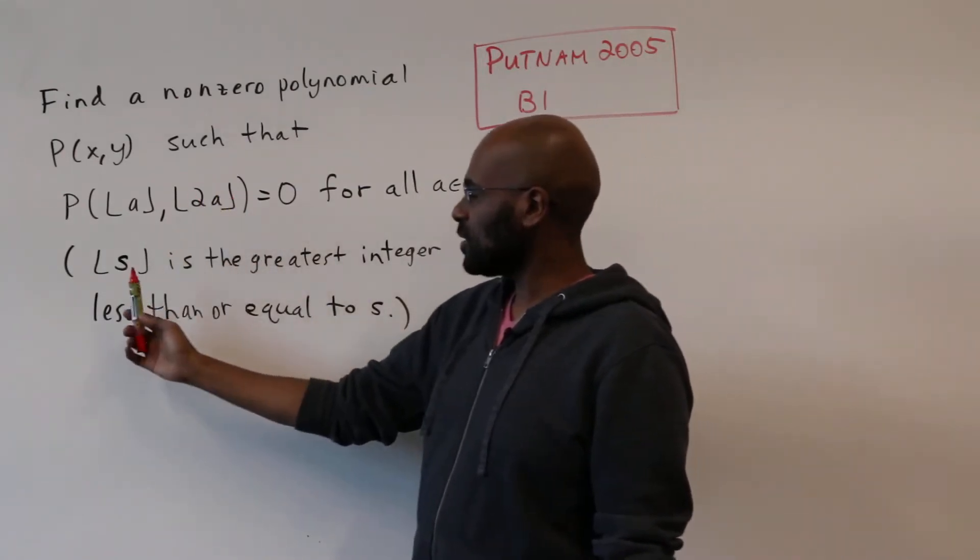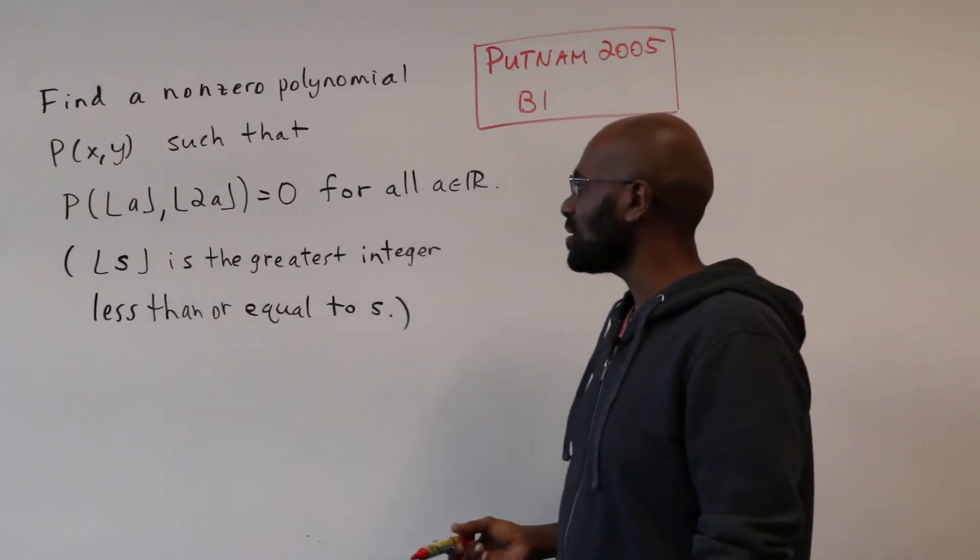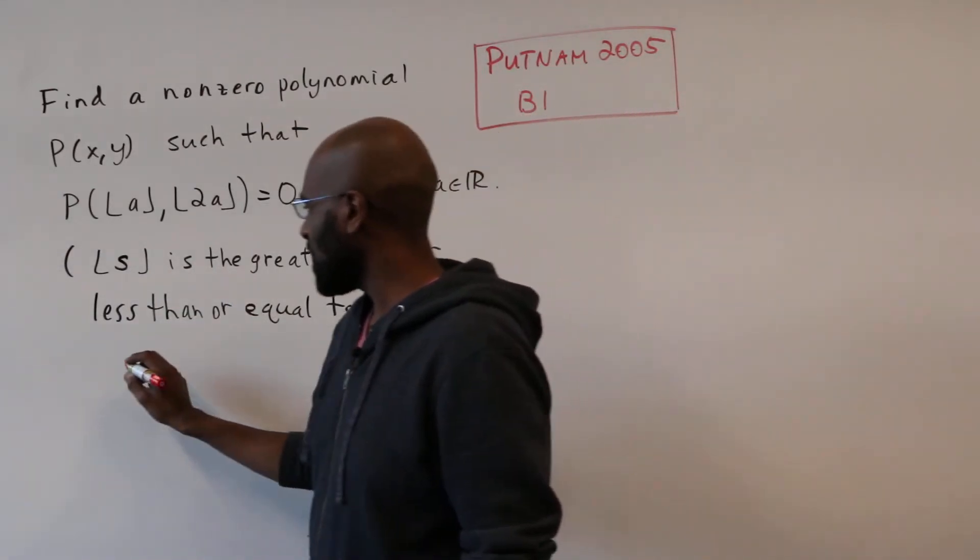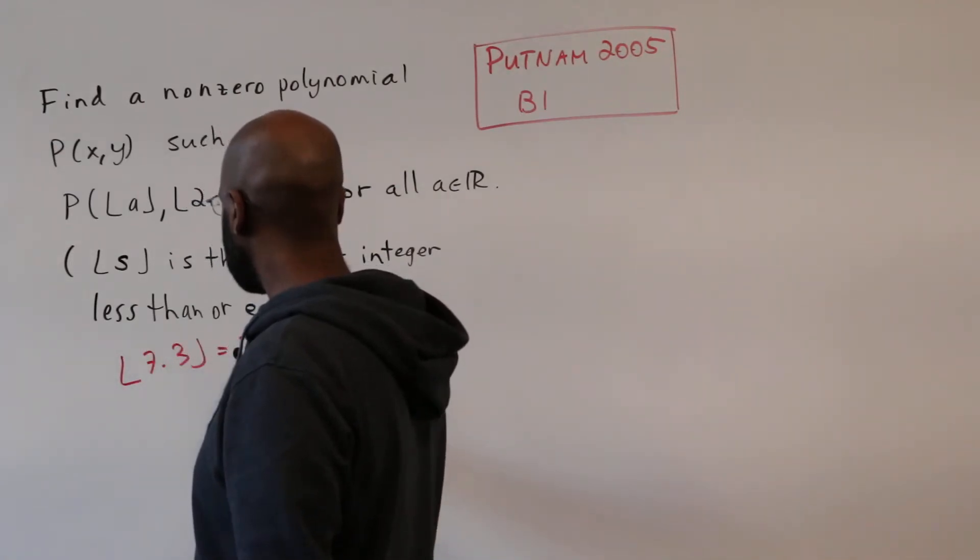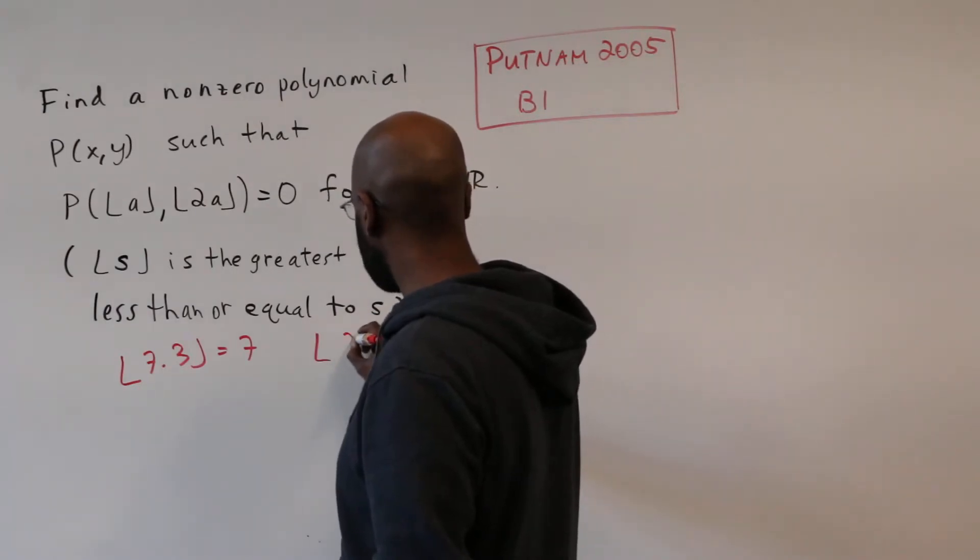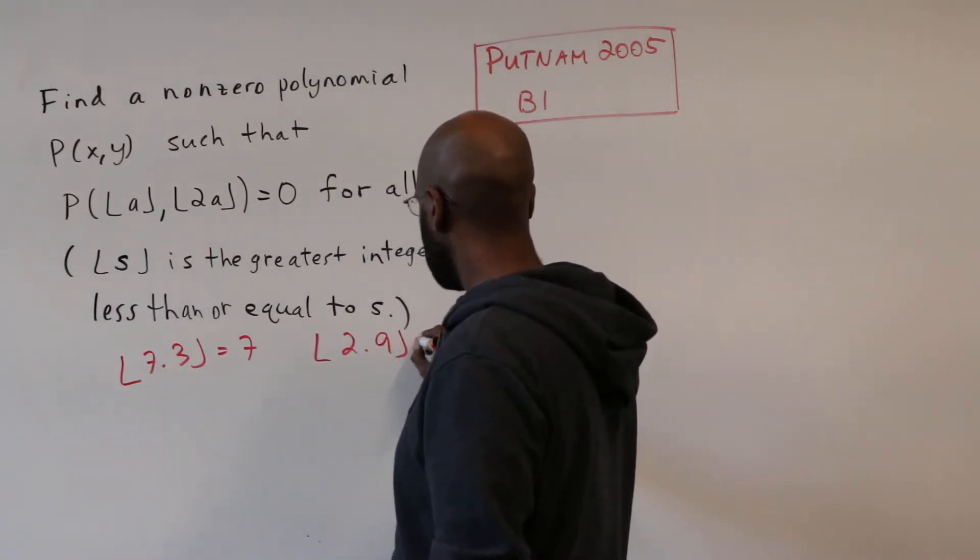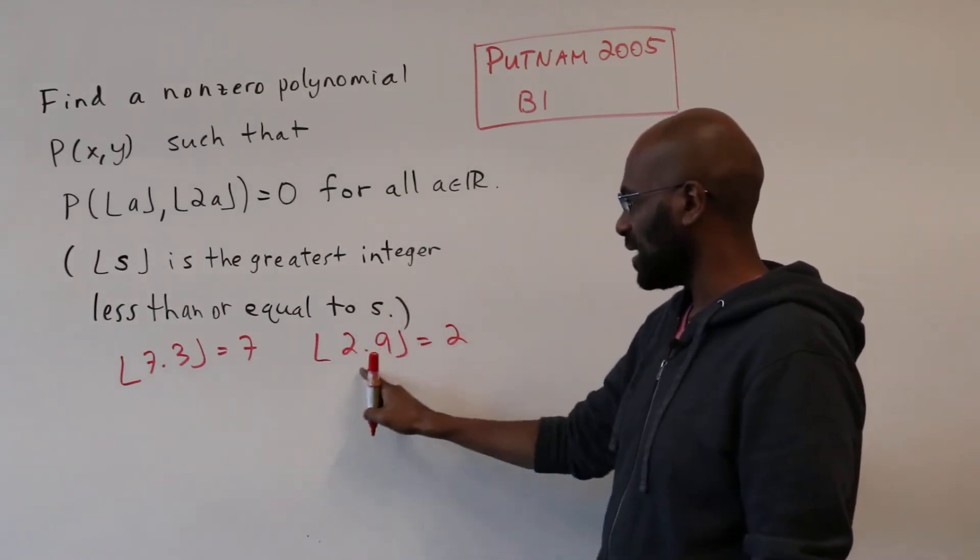And here the floor function does the following: the floor of any real number s is the greatest integer less than or equal to s. So for example, the floor of 7.3 is 7, whereas the floor of something like 2.9 is 2. So it's not the integer closest to this, but it's the greatest integer that's less than or equal to this thing.